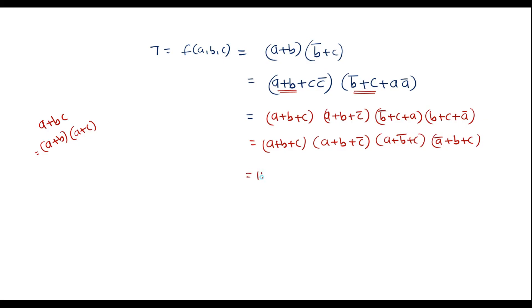We can represent it as ΠM. The term (a+b+c) is 0,0,0 which is maxterm 0. The term (a+b+c') is 0,0,1 which is maxterm 1. The term (a+b'+c) is 0,1,0 which is maxterm 2. The term (a'+b'+c) is 1,0,0 which is maxterm 4. So this is the proper standard POS form. Thank you for watching.